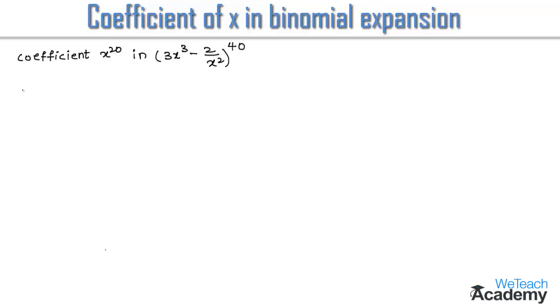Now let us compare the given binomial expansion with (x minus y) whole power n. Then we get the value of n as 40, the value of x as 3x cube, and the value of y as 2 by x cube.